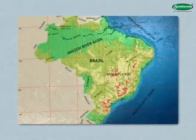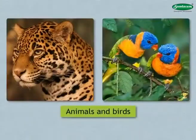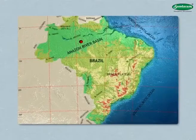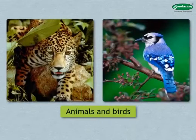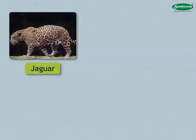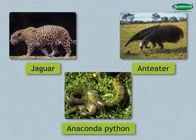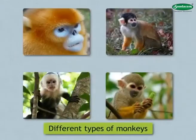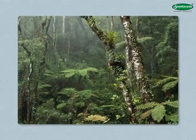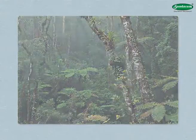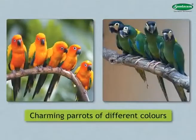The forests of the Amazon Basin are the natural habitat of a variety of animals and birds. Jaguar, anteater, anaconda python, different types of monkeys, and colorful butterflies are found here. The forests are lively and swarming with a variety of singing birds and charming parrots of different colors.